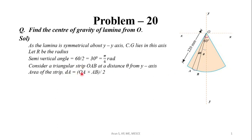Area of the rectangular strip dA will be OA into AB by 2. OA is equal to capital R. And AB will be R into included angle dθ. So R into R dθ by 2. So we will get R² dθ by 2.